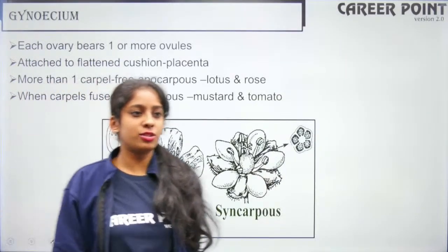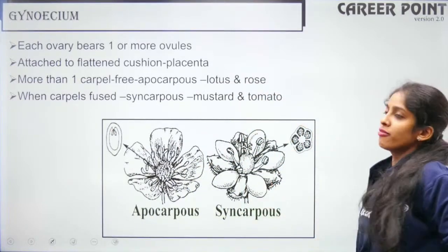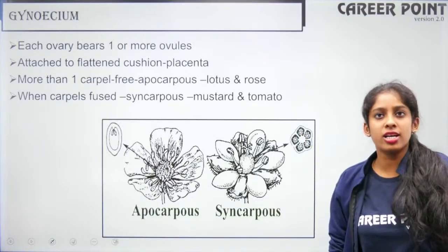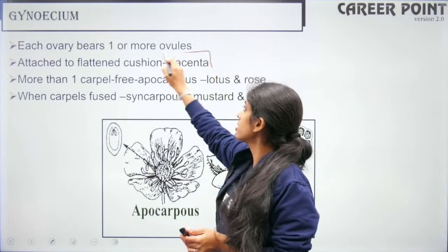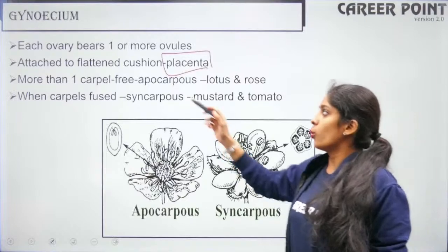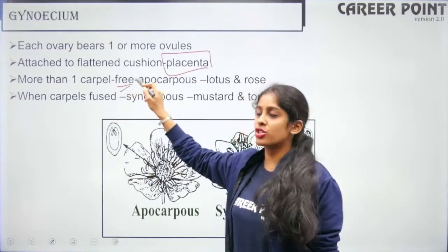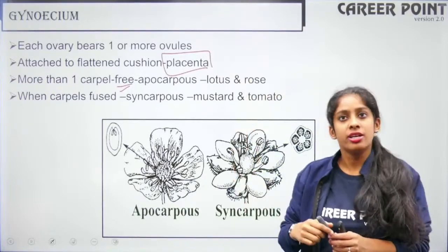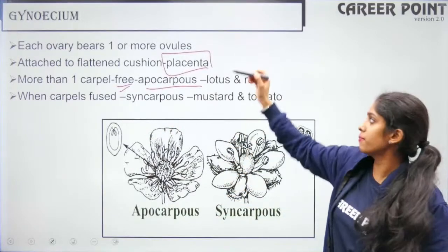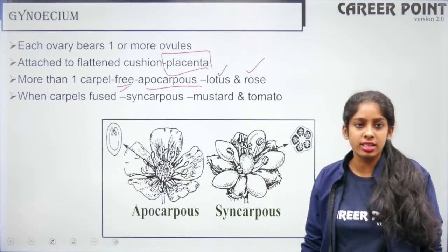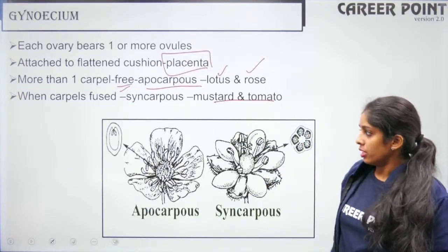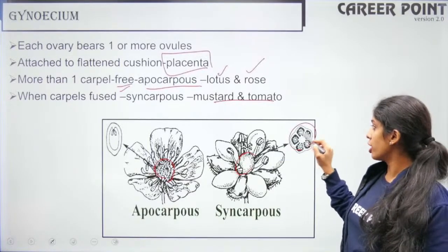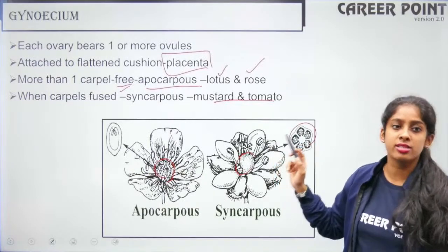When carpels are free it is called apocarpous; examples are lotus and rose. When carpels are fused it is called syncarpous; examples are mustard and tomato. In the picture you can see the free gynoecium (apocarpous) and fused carpels (syncarpous) — here you can count five fused carpels.